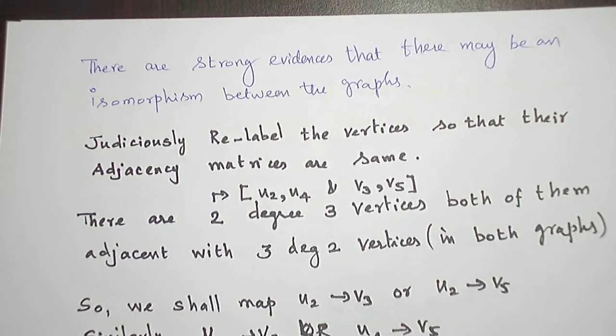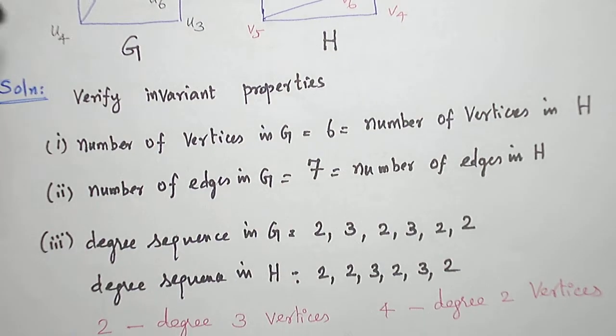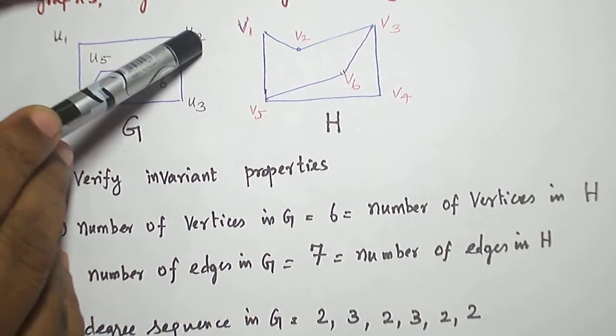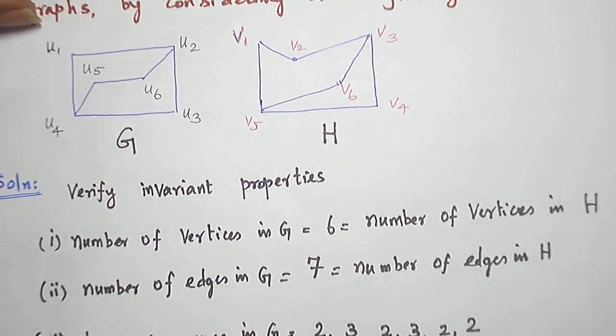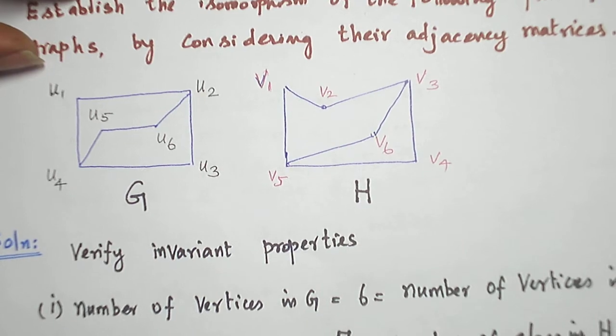So, first of all, I consider there are two vertices of degree 3. What are the vertices? U2 and U4 in G, and V3 and V5 in H.